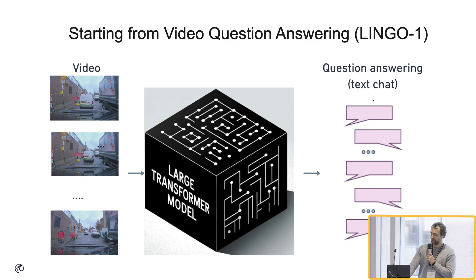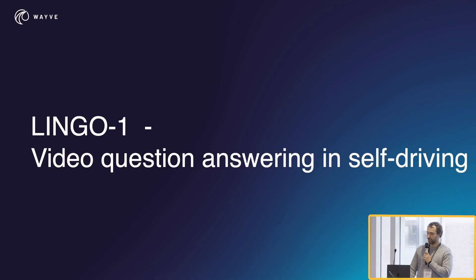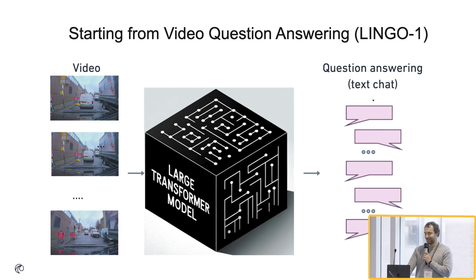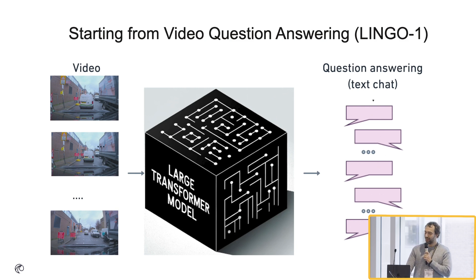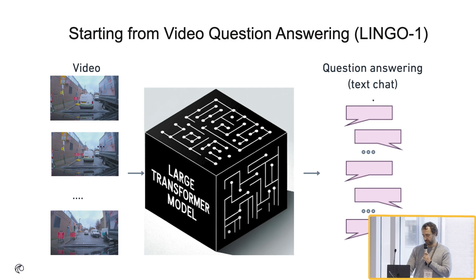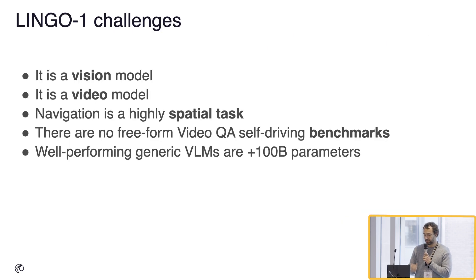After seeing that language models can do this reasoning, we decided to start a project called Lingo that's supposed to address all those big limitations. The first model I wanted to show is called Lingo 1. It takes in video, puts it through a big network — an LLM, a VLM — and produces text so you can chat about the autonomous driving video that you see.